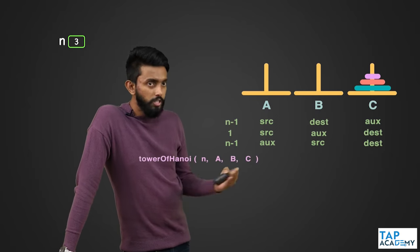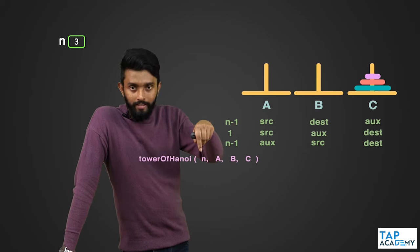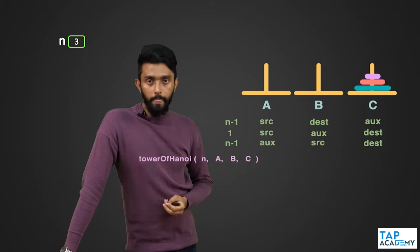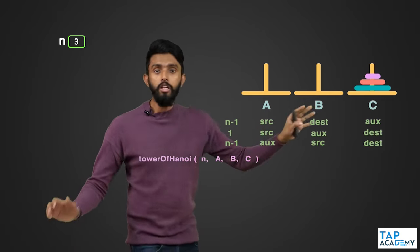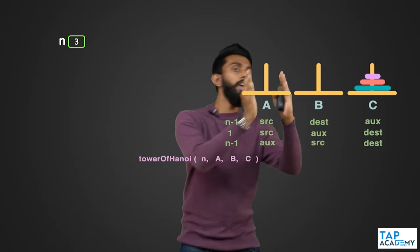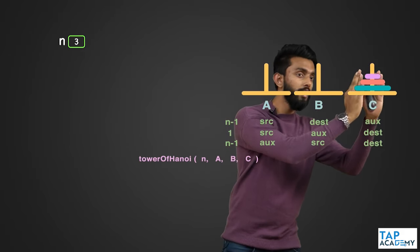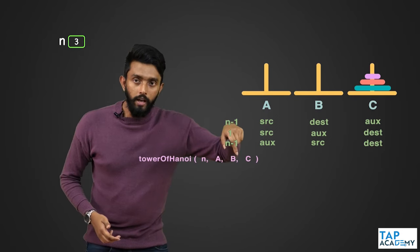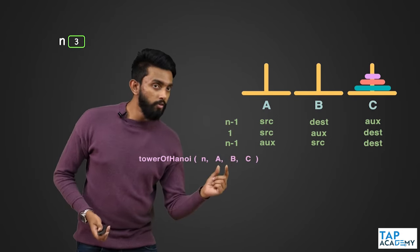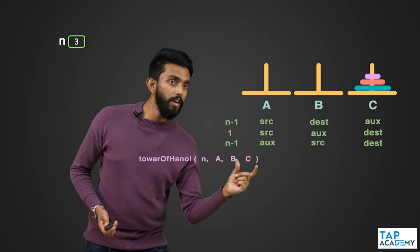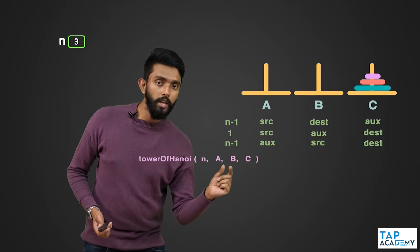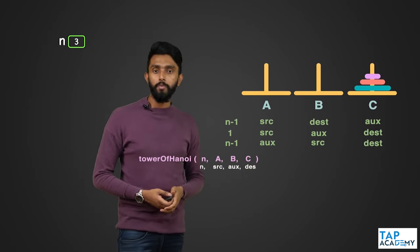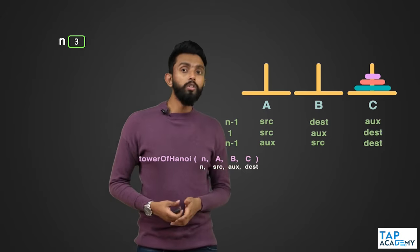Let me write a function called Tower of Hanoi which takes n (the number of discs) and three values: source, auxiliary, and destination. Initially, source is A, auxiliary is B, and destination is C. Inside the function, we break the problem down into three subproblems using this recurrence relationship.